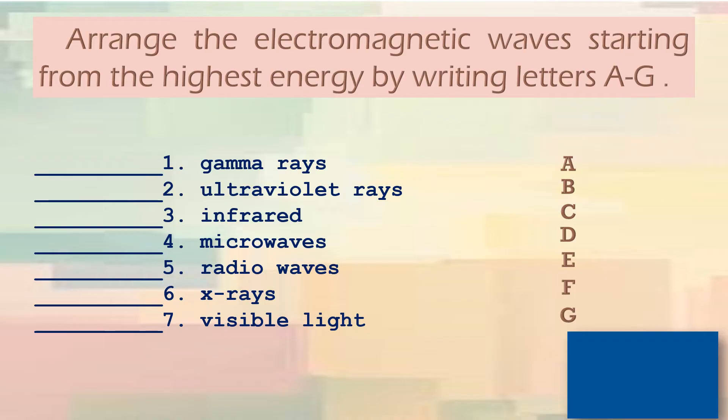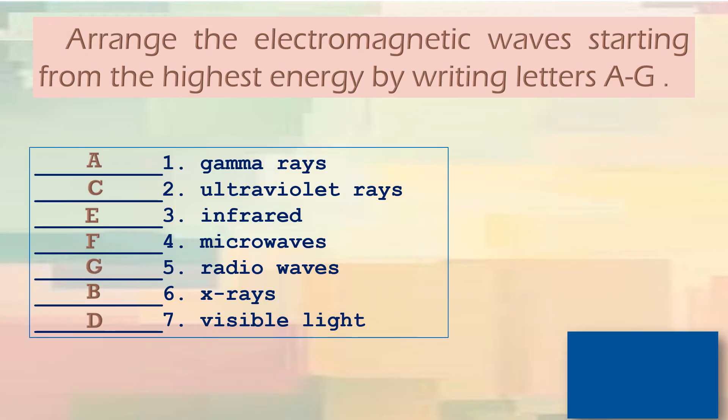Let's check if you get all the correct answers. Letter A would be gamma rays. Correct? Letter B, X-rays. That's nice! The third one is ultraviolet rays. Letter D would be visible light. Letter E, infrared. Letter F, microwaves. And finally, Letter G, radio waves. Very good learners!